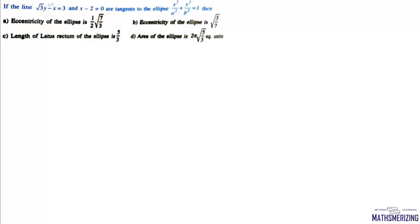Now the next question is: if the lines √3y - x = 3 and x = 2 are tangents to an ellipse, we need to find the eccentricity, length of latus rectum, and area of the ellipse.